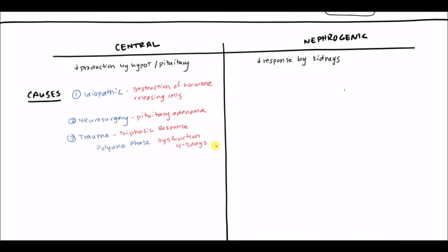After four to five days, you get a SIADH phase — syndrome of inappropriate ADH secretion — where there is way too much ADH. Instead of producing too much urine, the patient is suddenly not producing enough, reabsorbing all the fluid. This occurs because with trauma, destruction of the cells causes all stored hormones to be released. This happens between days six to eleven.